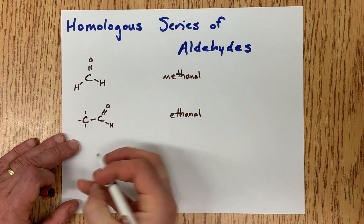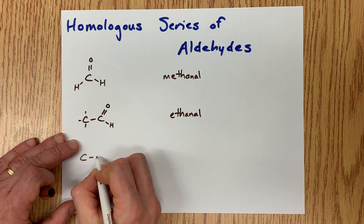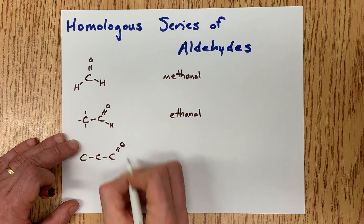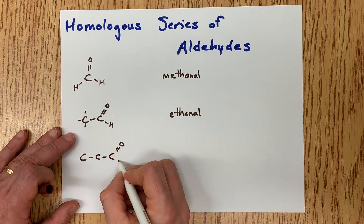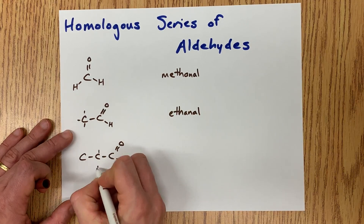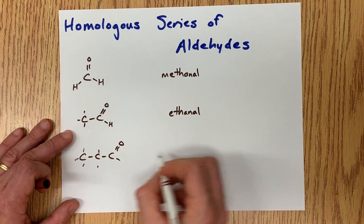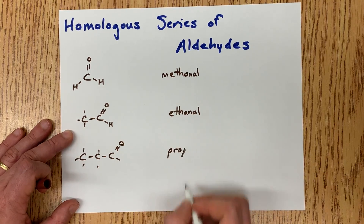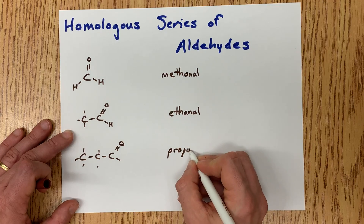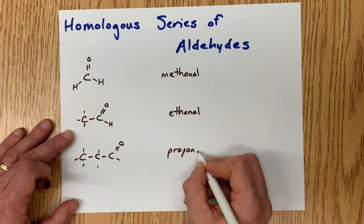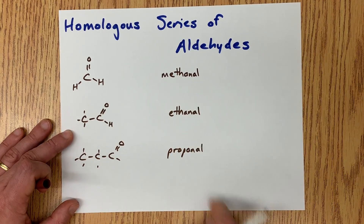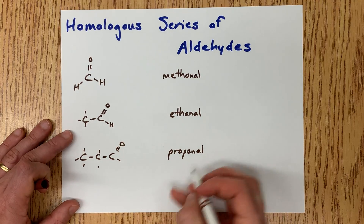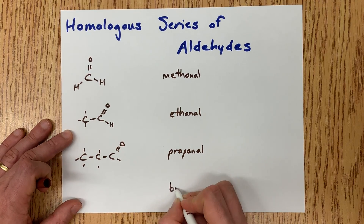The next member is a three carbon chain with a double bonded O at the end. Don't forget your hydrogens. Three carbon chain is 'prop', all single bonded together as an aldehyde — propanal.